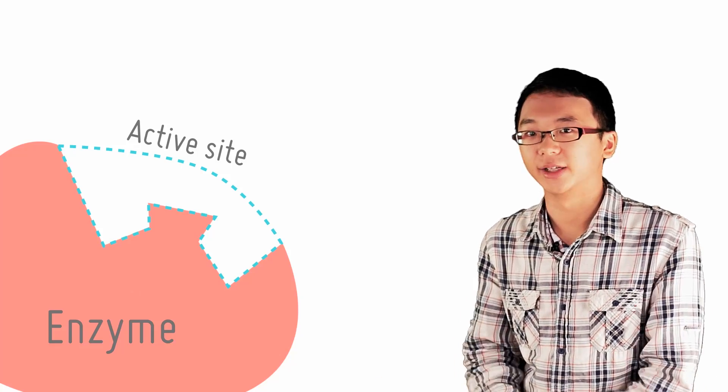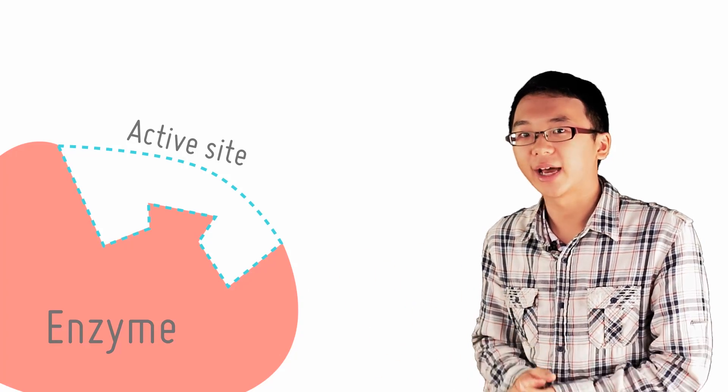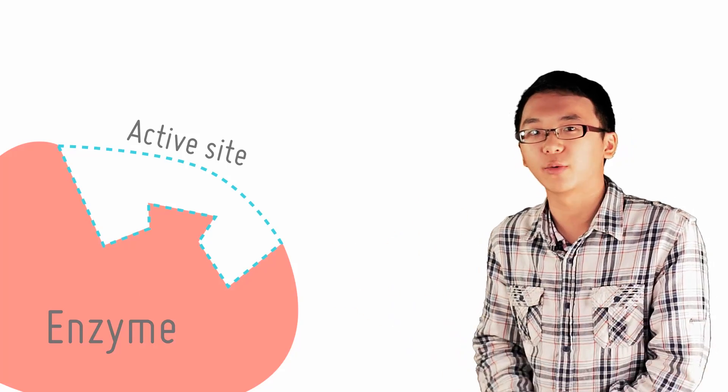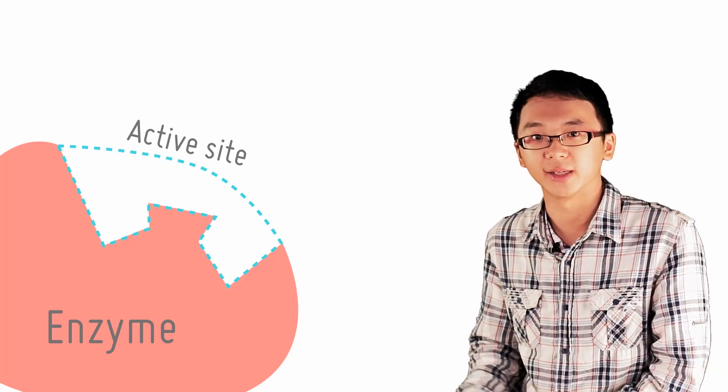Recall that we mentioned the active site in the previous video. To recap, an active site is where the party happens, where the substrate binds to the enzymes and where the breaking or forming of bonds in the substrate takes place.